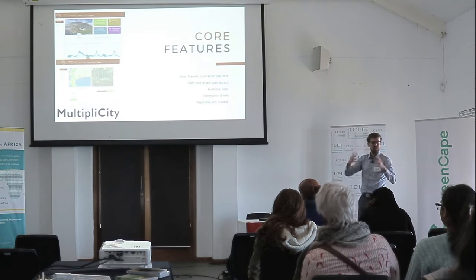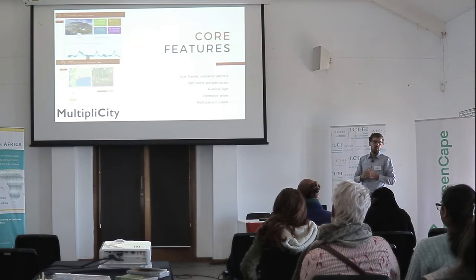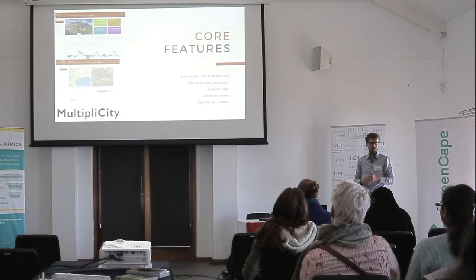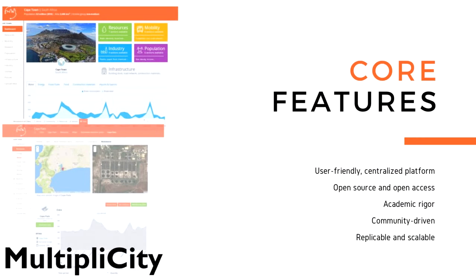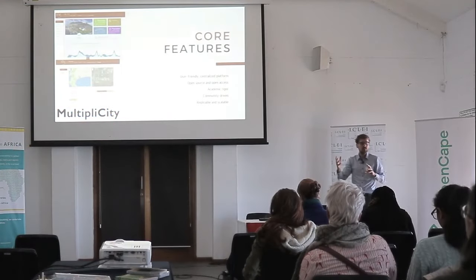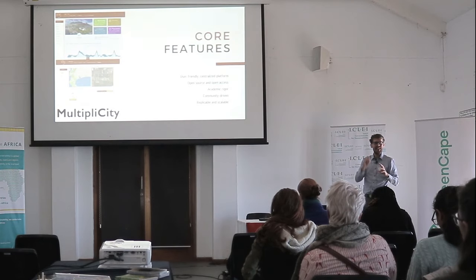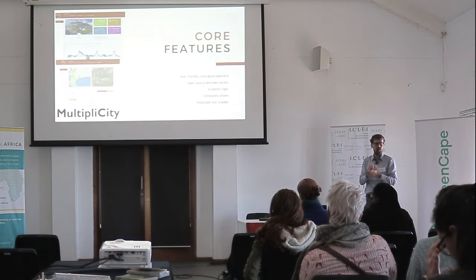We came up with this idea — this system we called Multiplicity — which is basically a data-driven online dashboard for urban metabolism. The core feature at number one: this needs to be user-friendly. This is not only for researchers; we want this to be accessible by anybody who has no clue what urban metabolism is and still find it interesting, engaging, and useful. At the same time, we do want it to be something researchers can engage with — we come from an academic background and we need that academic rigor in our system.